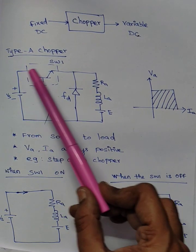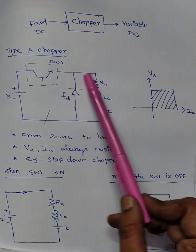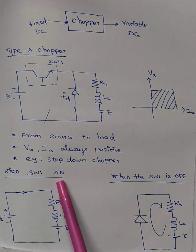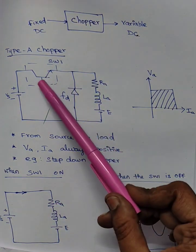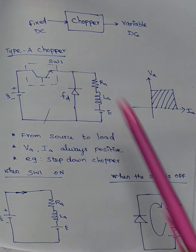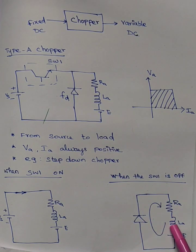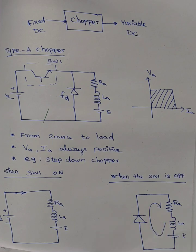When the switch is on, the supply feeds current through the motor. When the switch is off, the motor freewheels through this diode. The stored energy in the inductor dissipates via this diode into the motor itself — it does not feed back to the supply.